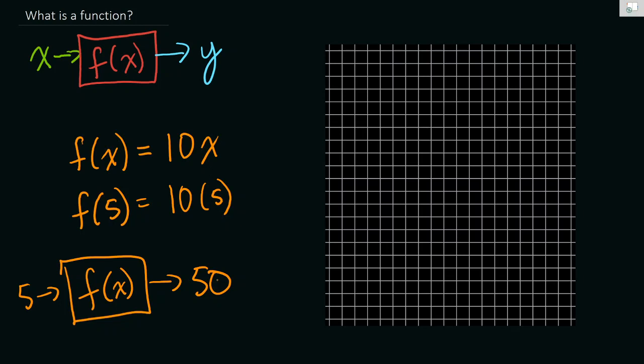What makes functions different from relations is that you always get the exact same y value no matter what you put in, and it's always just one y value. If I work eight hours, there's no question what do I get paid. Eighty dollars. It's always the exact same eighty dollars every time, and so that is what makes a function.